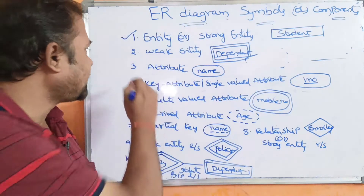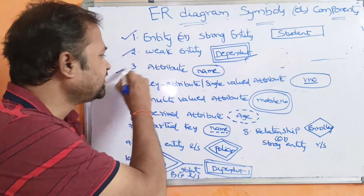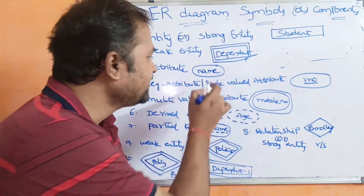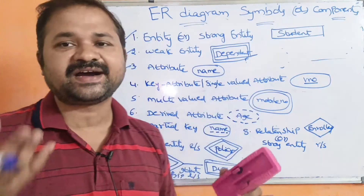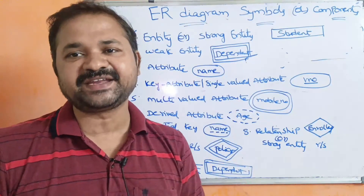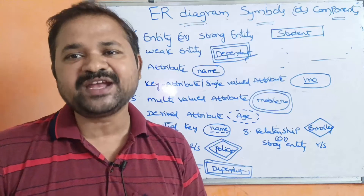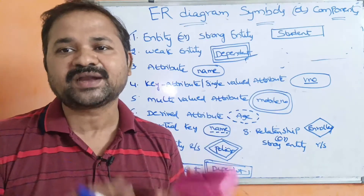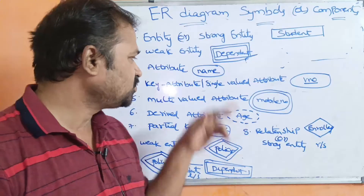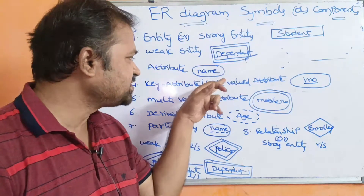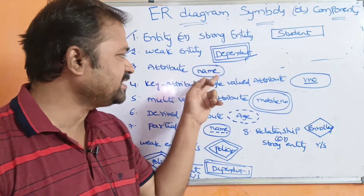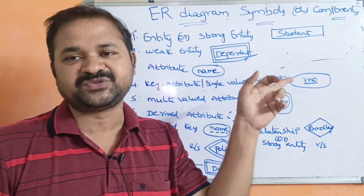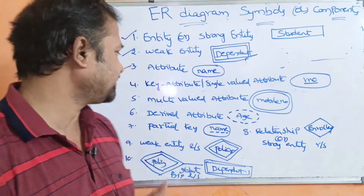Next is the attribute. The attribute is always represented by an ellipse symbol. If you take a student entity, the student entity has various properties such as roll number, name, and marks. Those are specified within the ellipse. So name is an attribute — a property of the student.